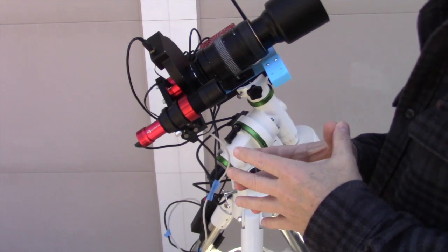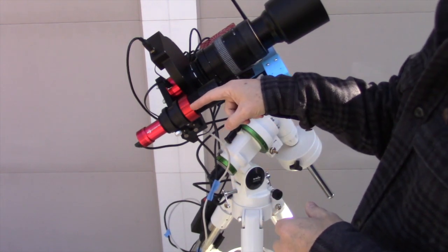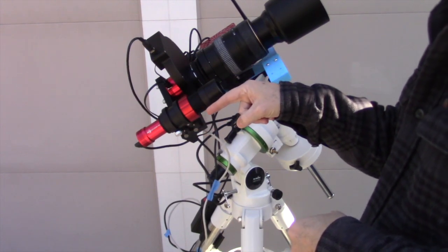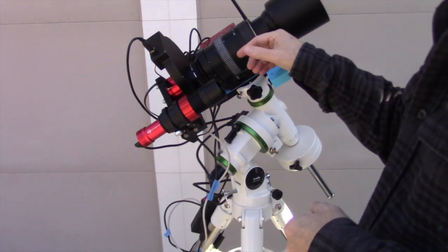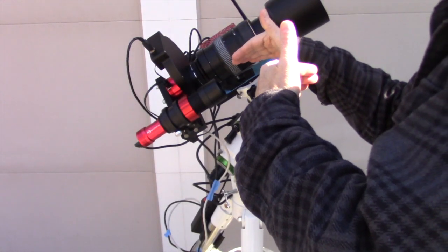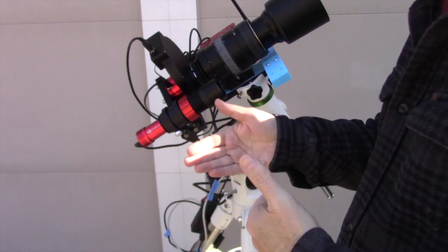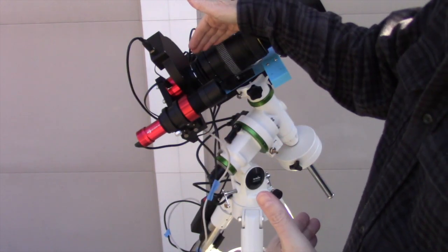this can cause a lot of issues because the guide scope will be trying to correct on what it sees and it's not paired to what the telescope sees. And so this means that it will make unnecessary corrections and throw your final imaging train off.